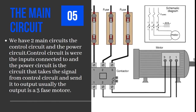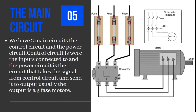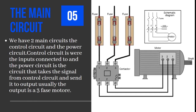The main circuit: we have two main circuits — the control circuit and the power circuit. The control circuit is where the inputs connect to the power circuit; it is the middle circuit between the input devices and the output devices.